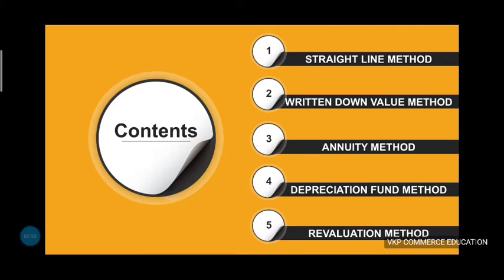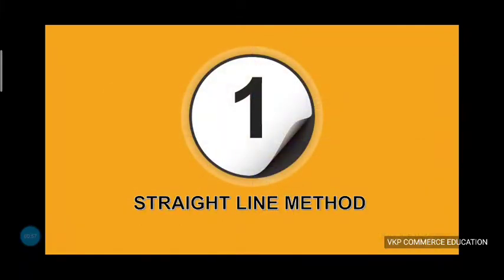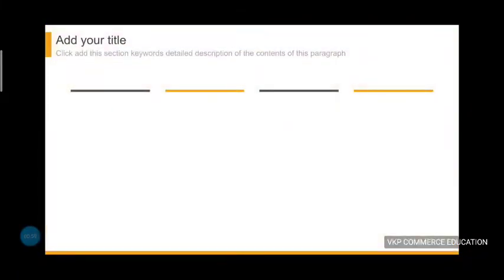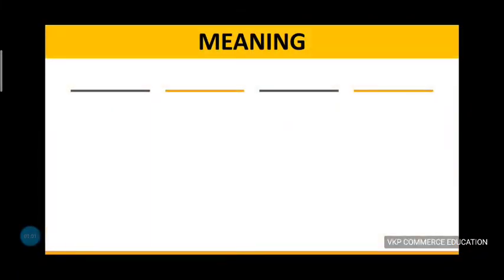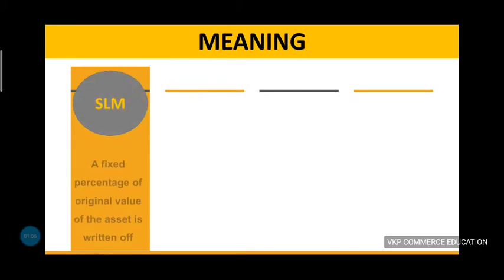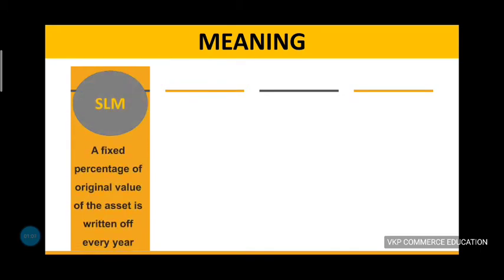When we discuss the straight line method — what is the straight line method? In the SLM, a fixed percentage of the original value of the asset is written off every year.